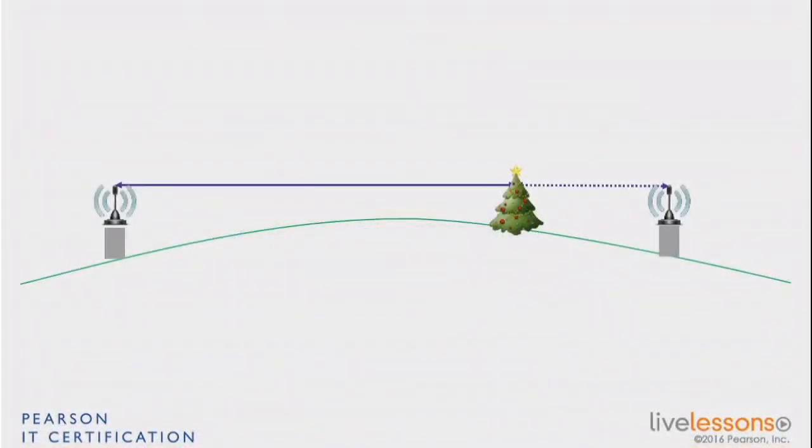What line of sight is, is that if you have a receiver and a sender, they have to be able to be in range, that's the amount of energy and the link budget, but they also have to be able to see each other from a radio perspective.